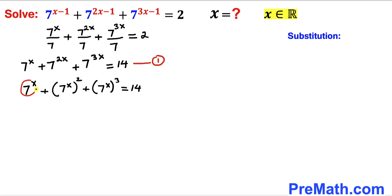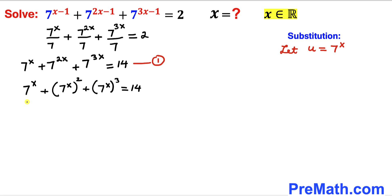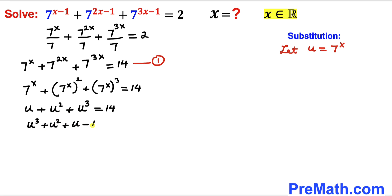Now we are going to make a substitution to make the job simpler. We are going to focus on 7^x — I'm going to call 7^x as u, so u = 7^x. After the substitution this becomes u + u² + u³ = 14. Moving 14 to the left hand side and writing in descending order: u³ + u² + u − 14 = 0.